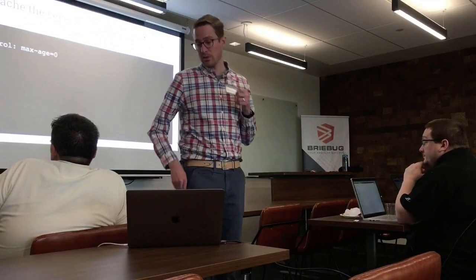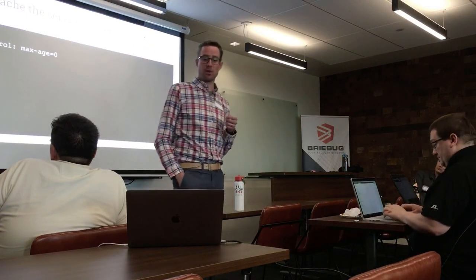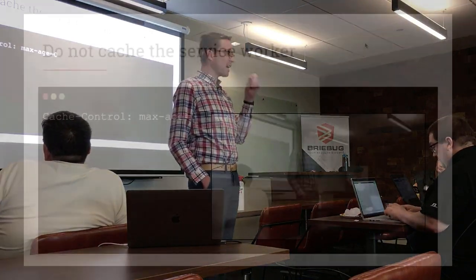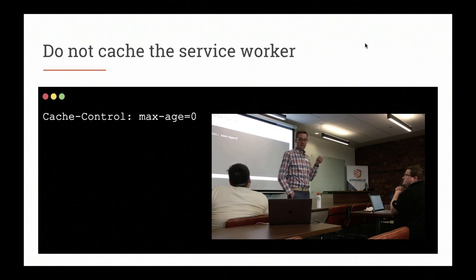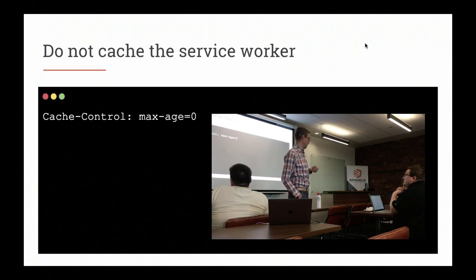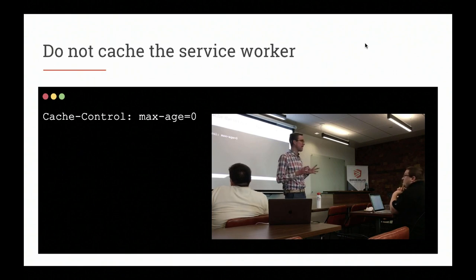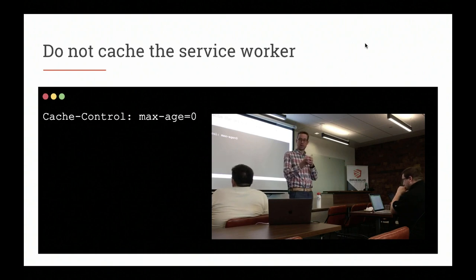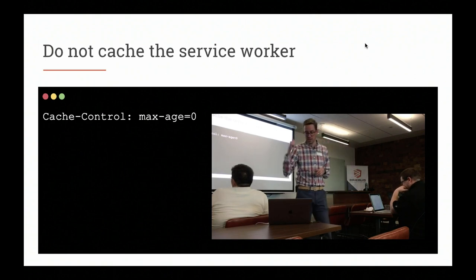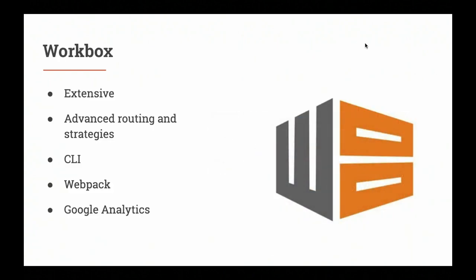Here are some tips from two years of doing progressive web apps. First: do not cache your service worker file, ever. If your ops team sets a six-month cache on all static files and that applies to sw.js, your users will never get an application update for six months and you are locked out. Set the Cache-Control header on the service worker response with max-age=0 to tell the browser never to cache it.